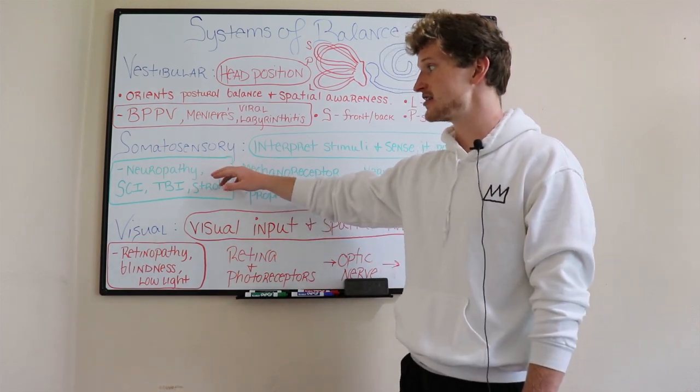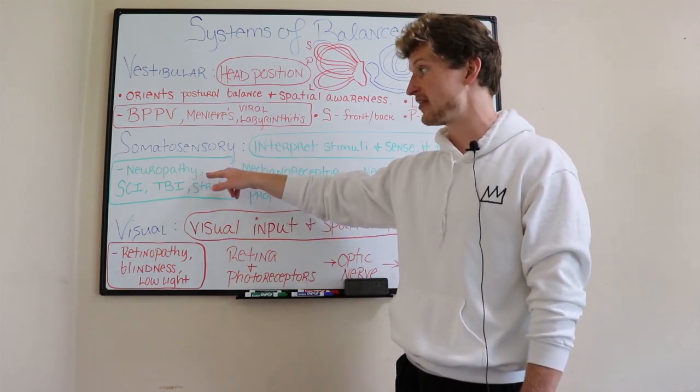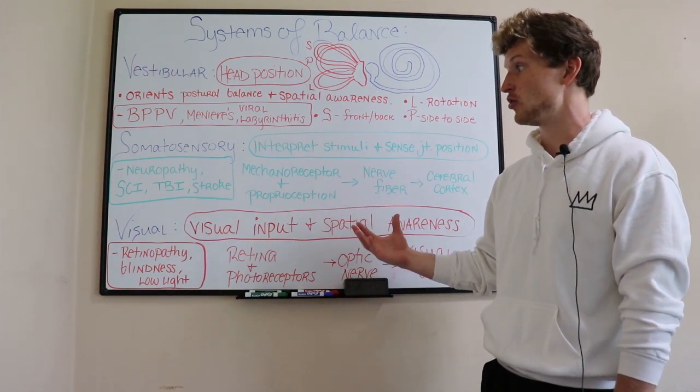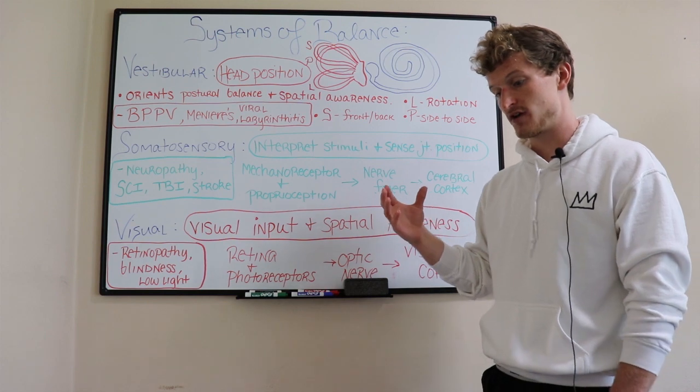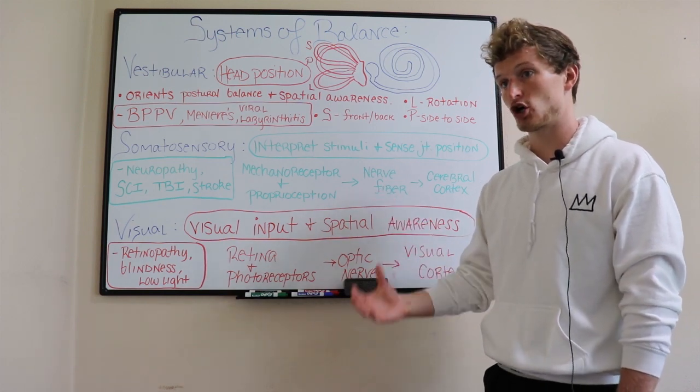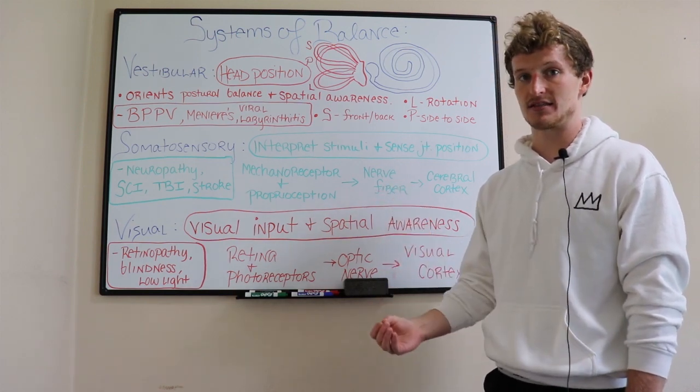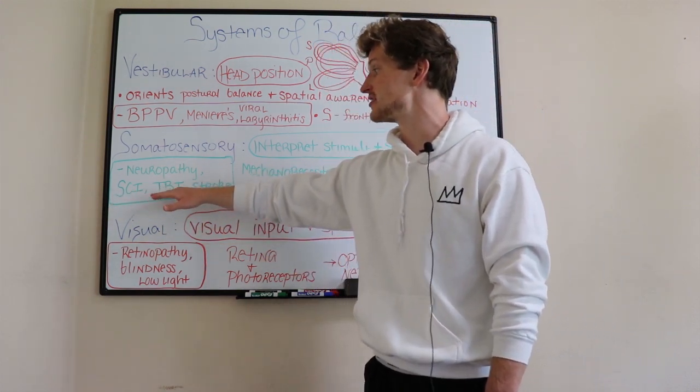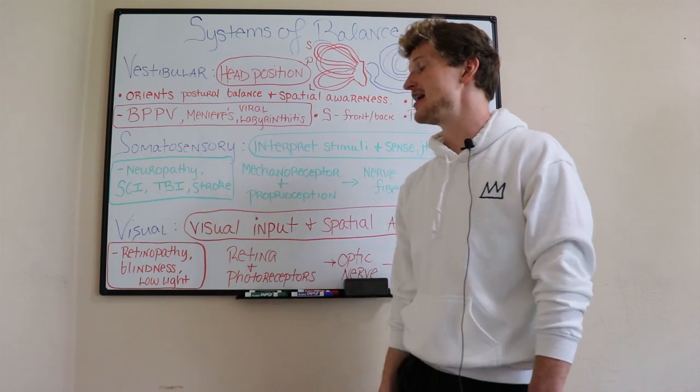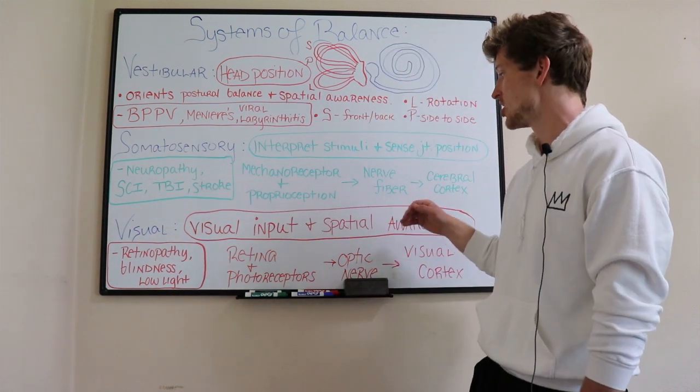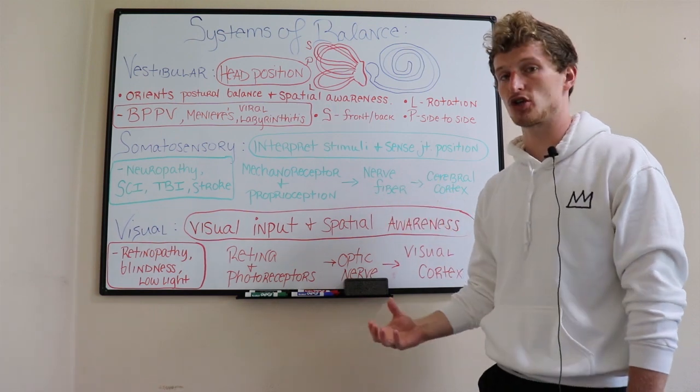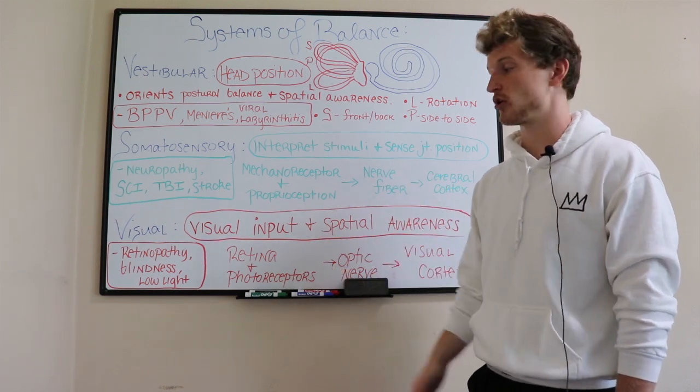Some things that would affect your somatosensory system include neuropathy, decreased sensation, and decreased ability to understand what kind of terrain you're on and interpret that stimuli. Also, central nervous system infarcts like TBI, stroke, and spinal cord injury affect your nerves and cerebral cortex and their ability to interpret that stimuli and communicate with your body.